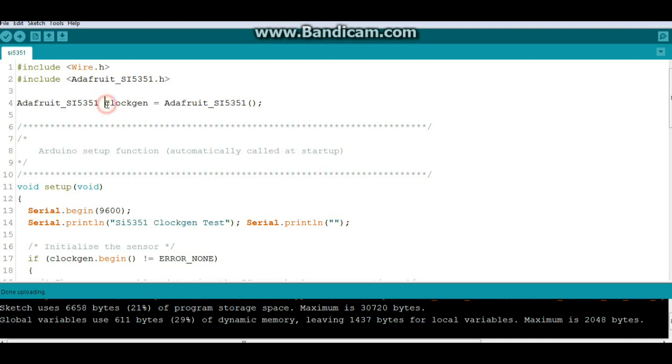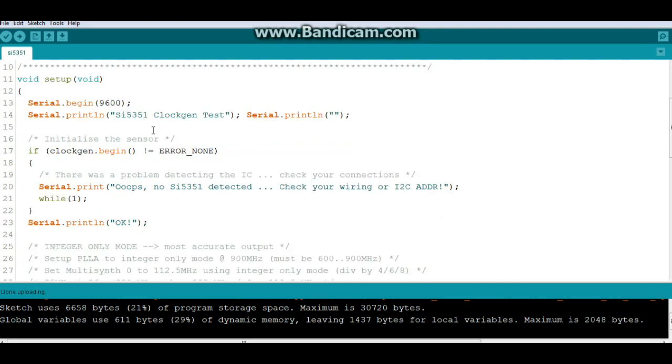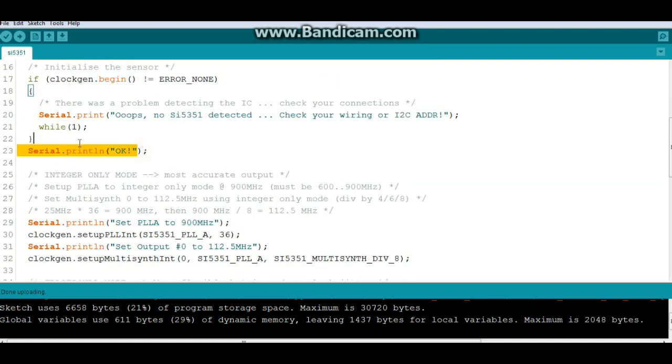Now here's what we're going to call the library SI5351 ClockGen Adafruit SI5351. Then down here in our setup section we're going to make sure it's working so we say if clock begin not equal error then it's going to work and it'll print out okay otherwise you're going to get an error message up here.